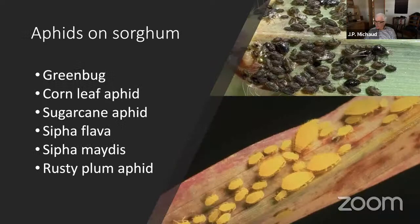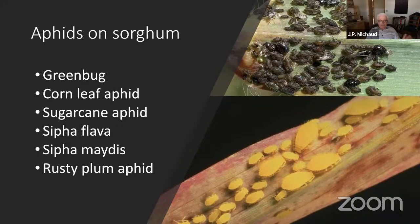Believe it or not, we now have at least six species of aphids active in the milo — actually seven, but I'm not going to include the mealy plum aphid because I've only ever found it once at the station. These species I have all observed a number of times at various locations throughout central Kansas, although mostly in very small colonies.